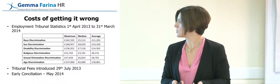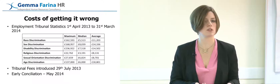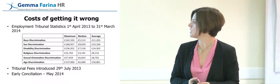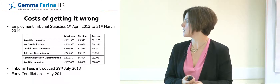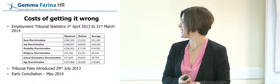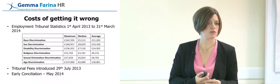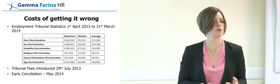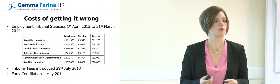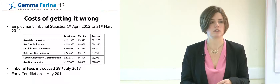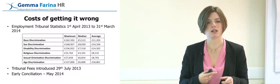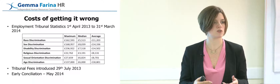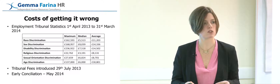What are the costs of getting it wrong? Looking at Employment Tribunal statistics from 2013: the maximum award for a sex discrimination case was £168,000, and the average for an age discrimination case was £18,000. Are those really costs you can afford? On the positive side, tribunal fees were introduced in July 2013, and early conciliation now means any claim must go through ACAS before it reaches a tribunal. So there are barriers, but tribunal claims have gone down — they're still there, though.